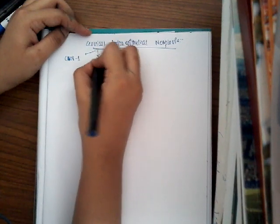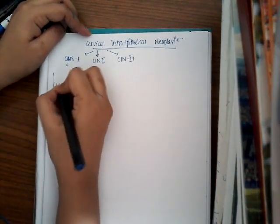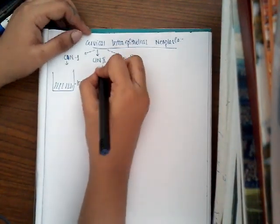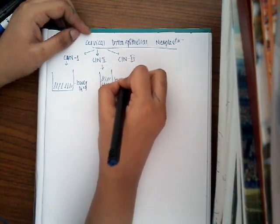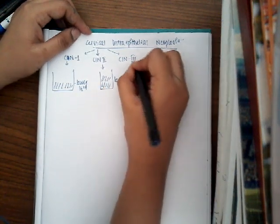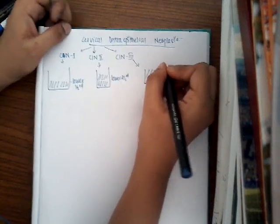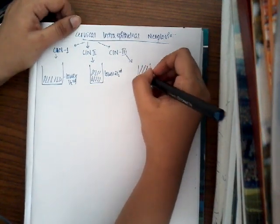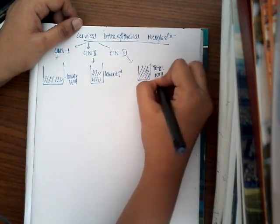Cervical intra-epithelial neoplasia can be divided into three types: CIN 1, CIN 2, and CIN 3. If the lesion involves the lower one-third of the epithelium, it is called CIN 1. If it involves the lower two-thirds (middle and lower one-third), it is called CIN 2. If it involves the whole epithelium — upper, middle, and lower one-third — it is called CIN 3.